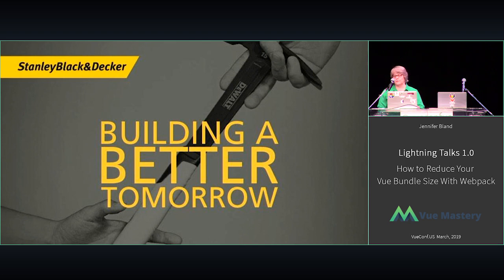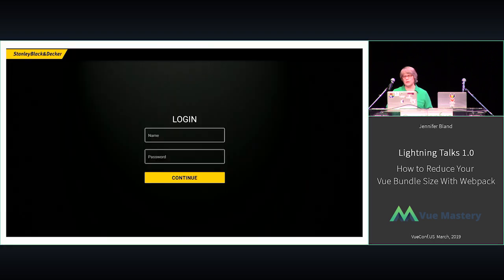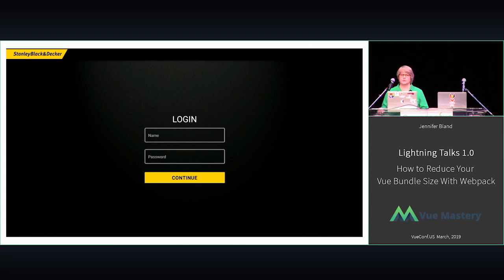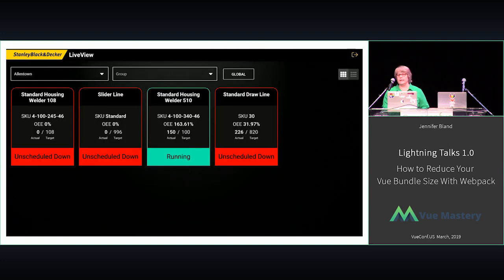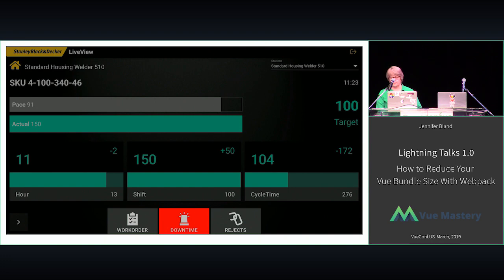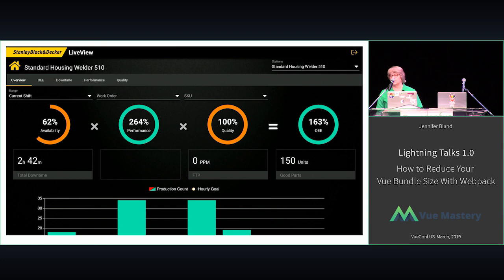What we did was we created what's called our Factory Core Framework, which is an aggregation of multiple applications built into one application. Any person in a factory worldwide at Stanley can log in. It will determine what factory they're located at, what applications they have access to, what permissions they have, and once they log in, it will take them to one of the applications that's part of our Factory Core Framework — the admin app, our OEE app, our IoT app, or our paperless application.